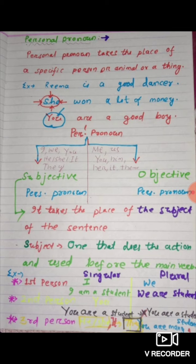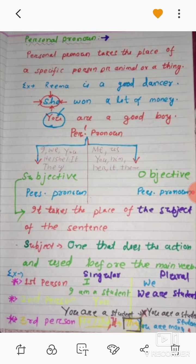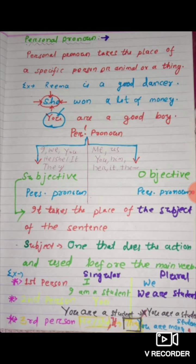Next is the third person — he, she, or it. 'He' is used for male, 'it' is used for things, and 'she' is used for female. This is the singular form of the third person. And the plural form of all third persons — singular — is 'they.' They can be used for both male and female. For example: There are many teachers. There are many doctors.